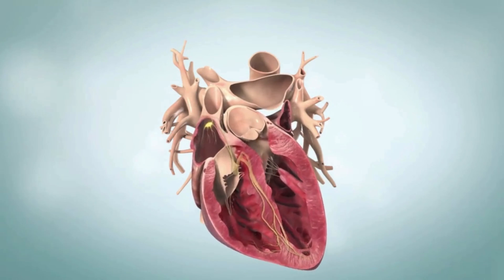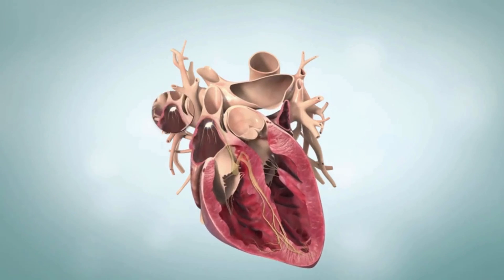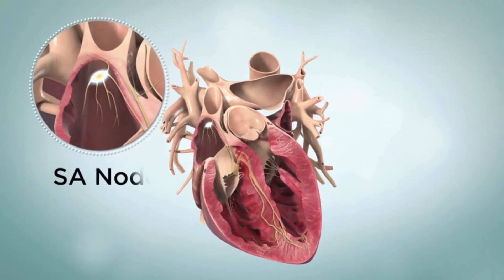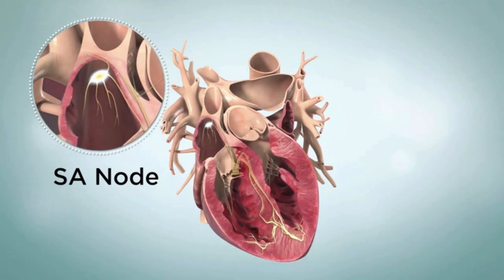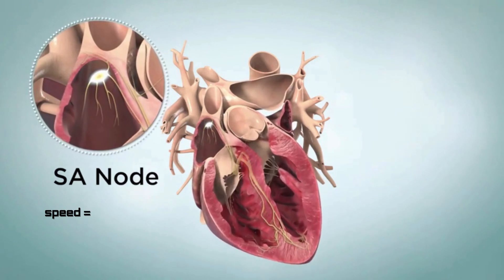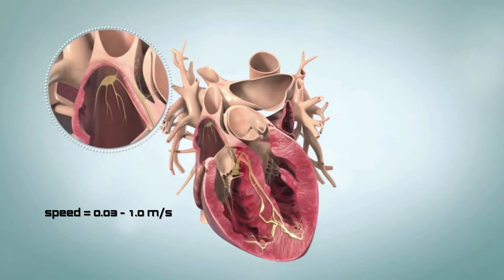First up, we have the sinoatrial node, or SA node. This tiny but mighty node initiates the electrical impulse that kickstarts each heartbeat. With a speed ranging from 0.03 to 1.0 meters per second,